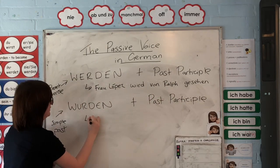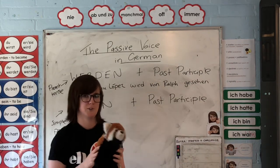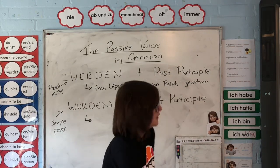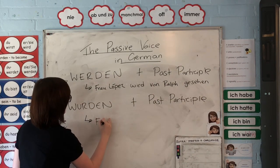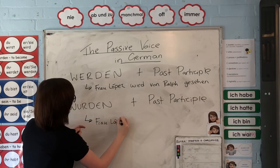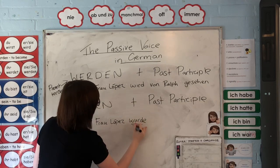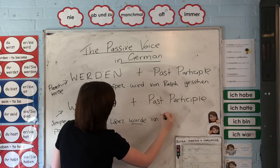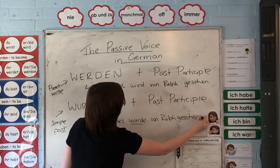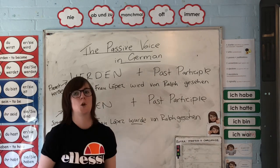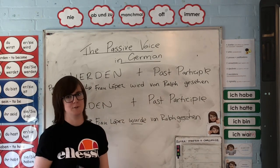Now let's look at the past tense. Let's imagine Ralph is having a bit of a chill today but he saw me yesterday. We can say: 'Frau Lopez wurde von Ralph gesehen,' which means 'Miss Lopez was seen by Ralph.'